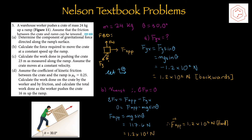Question 5: A warehouse worker pushes a crate of mass 24 kg up a ramp; ignore friction. Part A: determine the component of gravitational force directed along the ramp surface. Rotating the reference frame so the normal force acts upward, the x-component is on the opposite side relative to theta, so FGx equals mg sin theta, which equals negative 1.2 × 10² newtons. Since upward and forward are positive, the x-component of gravitational force is 1.2 × 10² newtons in the backwards direction.